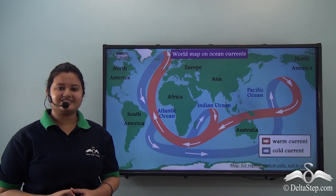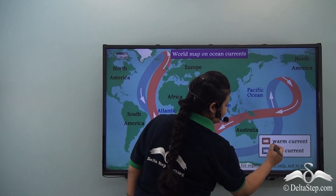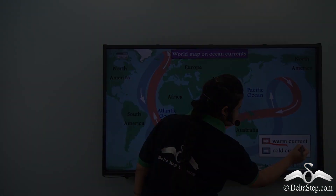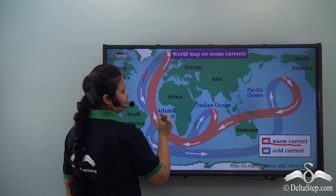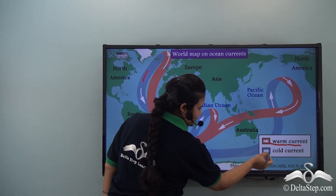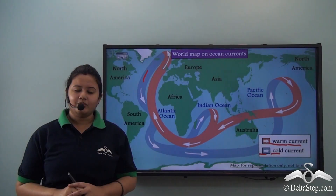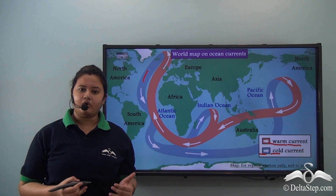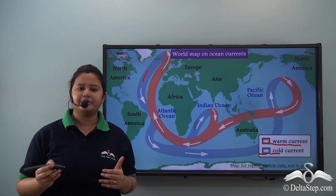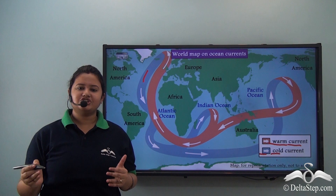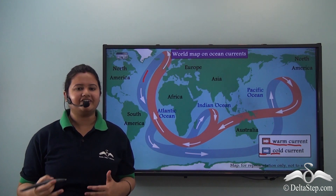Some ocean currents are warm — the ones which are marked with red — warm currents. Some ocean currents are cold — the ones that are marked with blue — cold currents. Some ocean currents are warm while others are cold because of temperature differences. We shall study the characteristics of warm and cold currents later.